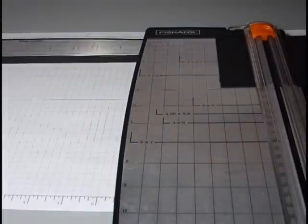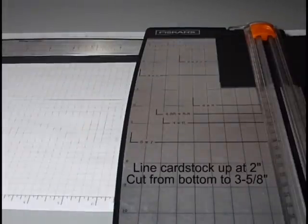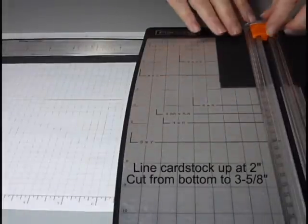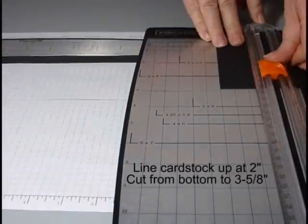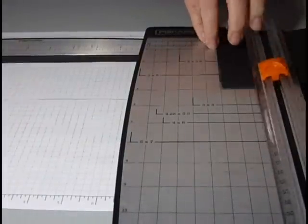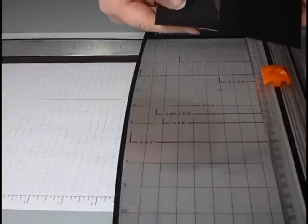For this piece of cardstock, we want to line it up in our paper cutter at 2 inches and cut from the very bottom of the piece all the way up to 3 5⁄8 inch. So you're cutting almost all the way through, but not totally.